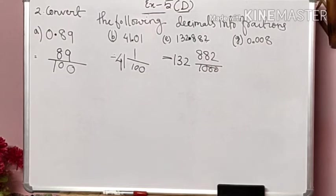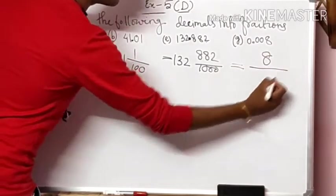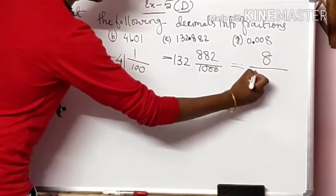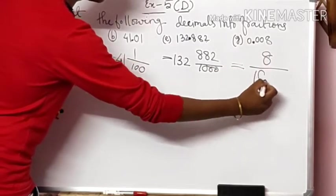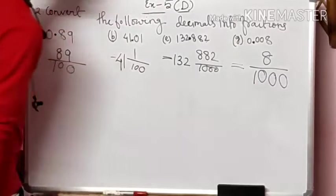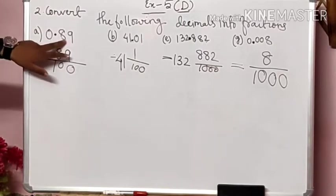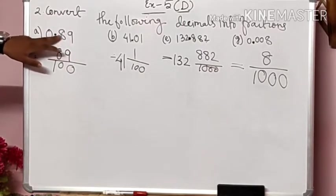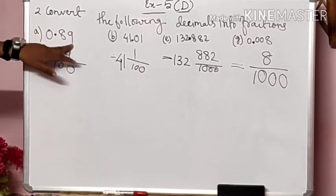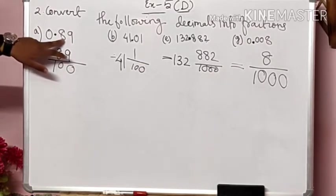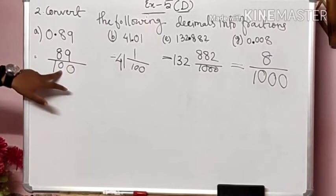Now we are going to do question number G. You see that this will be written as 8 directly since there are decimal numbers. How many numbers are after the decimal? 1, 2, 3 — so that's why we give 3 zeros, making it 8 by 1000. To summarize: 0.89 means we write 89 directly; after the decimal, number 1 and number 2, so 2 zeros — giving 89 by 100. And for 41.01, we write 41 as the whole number and 1 in the numerator with 100 as denominator.